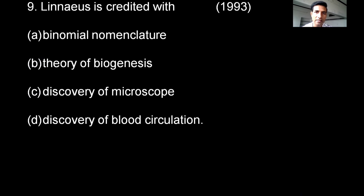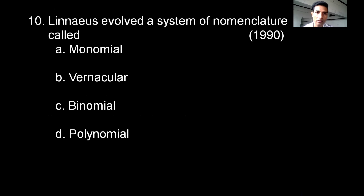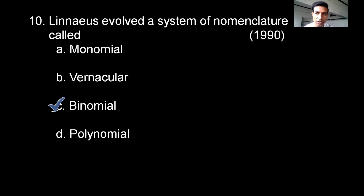Question: Linnaeus is credited with what? He is the father of taxonomy, credited with binomial nomenclature. The next question asks: Linnaeus evolved a system of nomenclature called — and again the correct option is binomial nomenclature.